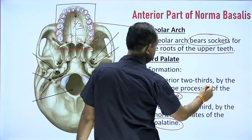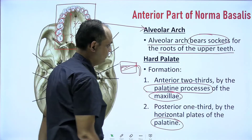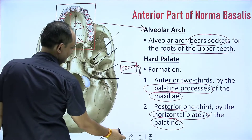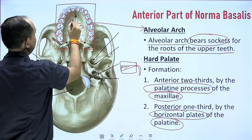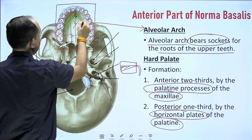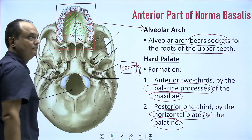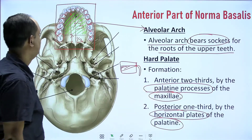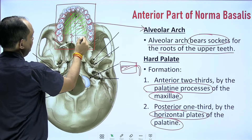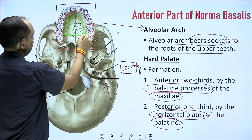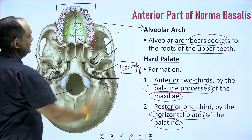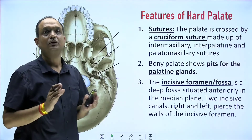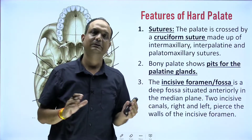The areas of the maxilla contributing to the hard palate are known as the palatine processes of maxilla, and the areas of the palatine bone are known as the horizontal plates of the palatine bone. The palatine processes are named so because posteriorly they make a joint with the palatine bone. So we have two bones — maxilla and palatine bone — and the joints between them are known as sutures.